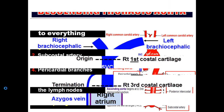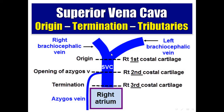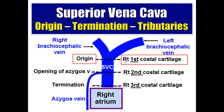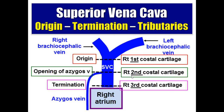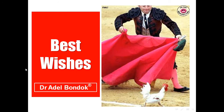The superior vena cava: formation — by union of the two brachiocephalic veins opposite the right first costal cartilage. Termination — into the right atrium opposite the right third costal cartilage. It has one tributary: the azygos vein, which enters opposite the right second costal cartilage. So: origin at first costal cartilage, azygos vein at second costal cartilage, termination into right atrium at third costal cartilage. Thank you very much, best wishes and good luck.